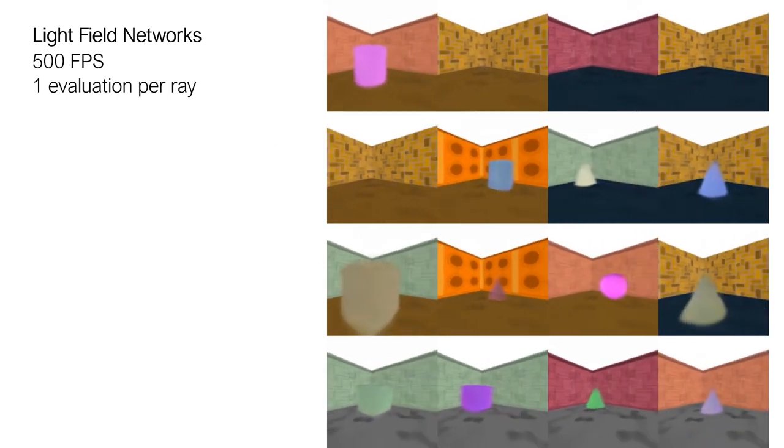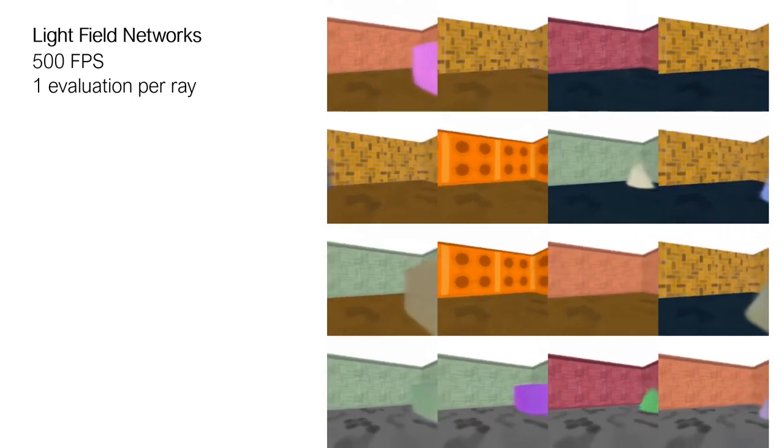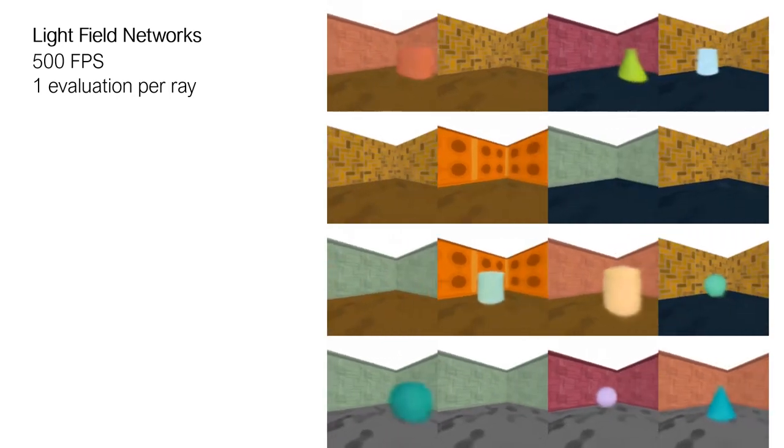Here we show real-time renderings of LFNs which encode simple room-scale scenes. LFNs are the first fully implicit neural scene representations that support rendering at real-time frame rates.